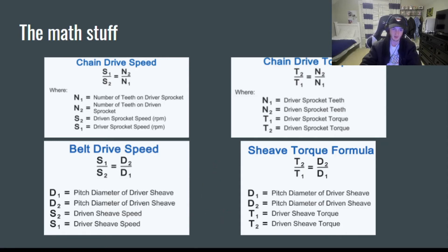For example, if you wanted to find the speed of your driven sprocket in a chain drive system, we would use the chain drive speed proportion here. And let's say, for example, the number of teeth on your driven sprocket is 12 and the number of teeth on your driver sprocket is 24. You would put the 24 on the bottom here and the 12 on top.